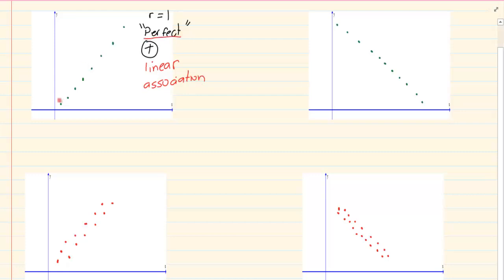So it's perfect because you can see even if I draw a line I'm most likely going to pass through all of them. So it's a perfect positively linear association.